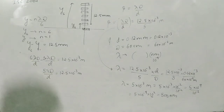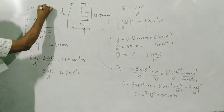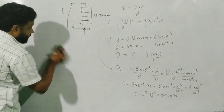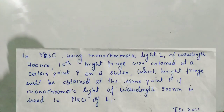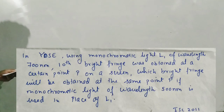That is the year 2007. Now we are going to year 2011. Please pause the video and take a note before we proceed. The question says: in YDSE using monochromatic light L₁ of wavelength 700 nanometer, the 10th bright fringe was obtained at a certain point P on the screen. Which bright fringe will be obtained at the same point if monochromatic light of wavelength 500 nanometer is used in place of L₁?